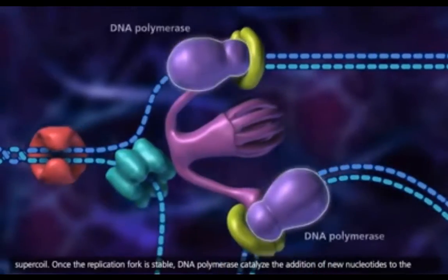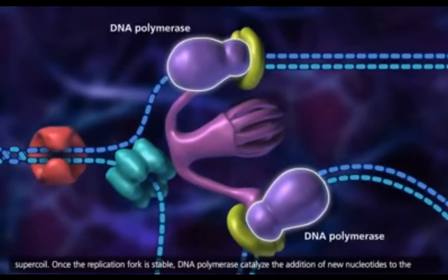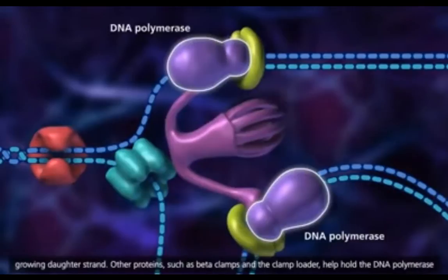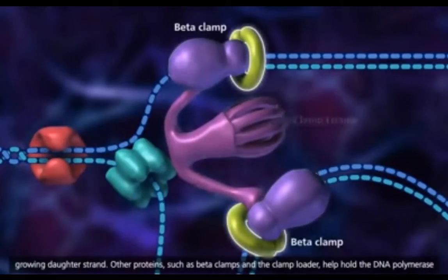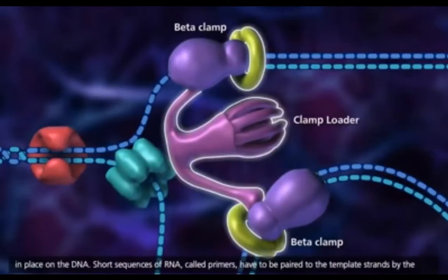Once the replication fork is stable, DNA polymerase catalyzes the addition of new nucleotides to the growing daughter strand. Other proteins, such as beta clamps and the clamp loader, help hold the DNA polymerase in place on the DNA.